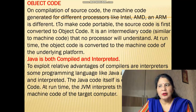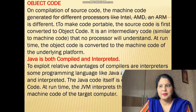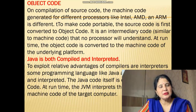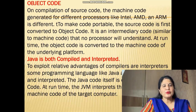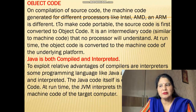Object code: on completion of source code, the machine code generated for different processors like Intel, AMD, and ARM is in different forms. To make code portable, the source code is first converted to object code. Object code is an intermediary code similar to machine code, also known as intermediary code. It is similar to machine code but no processor will directly understand it. At run time, the object code is converted to the machine code of the underlying platform — so object code is like machine code but not completely converted yet.